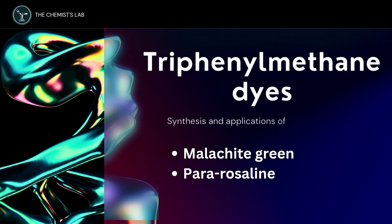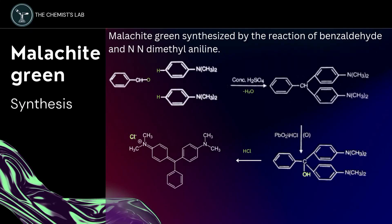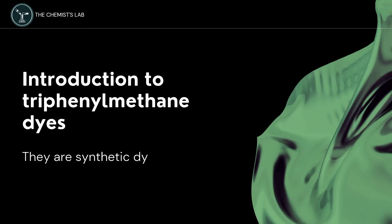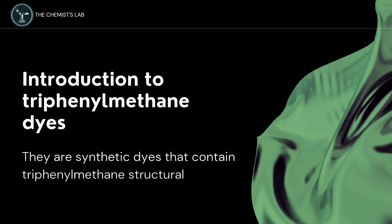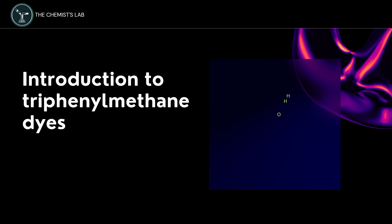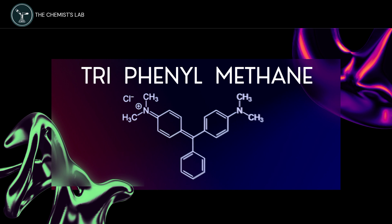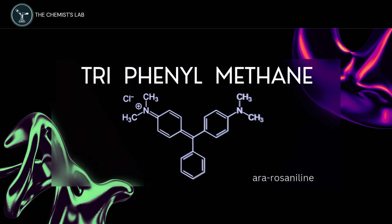Today we are going to discuss the synthesis of triphenylmethane dyes such as malachite green and parorosaniline and their applications. Triphenylmethane dyes are a class of synthetic dyes that contain a triphenylmethane structural motif. From the name tri-phenyl-methane, we can predict the chemical structure, which consists of a central carbon atom bonded to three phenyl groups and various substituents. Malachite green and parorosaniline are examples of triphenylmethane dyes.